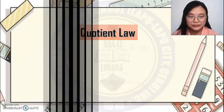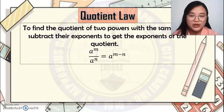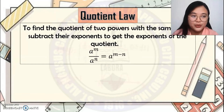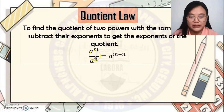The next law is the Quotient Law. To find the quotient of two powers with the same base, subtract their exponents to get the exponent of the quotient. For example, a to the m over a to the n — they have the same base a, and the operation is division — so you subtract their exponents: a raised to m minus n.